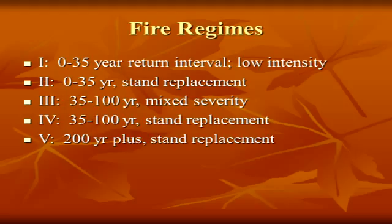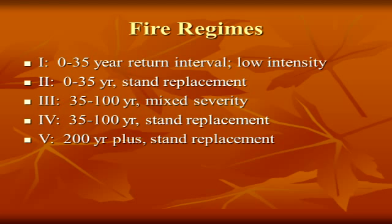When Okefenokee burns every four years, that's a typical 35 to 100-year return interval, mixed severity — it rips and roars, takes off canopy, and then in other places it's creeping. Fire regime four is a 35 to 100-year return interval stand replacement, found in things like sand pine. When they burn, they burn through the crown — a crown fire, black sticks when it's done. That's why they have serotinous cones; they regenerate from high-intensity fires. Lodgepole Pine out west and Chaparral in California are stand replacement regimes — that's how they're supposed to burn.